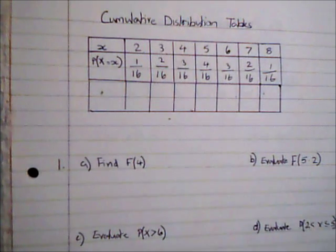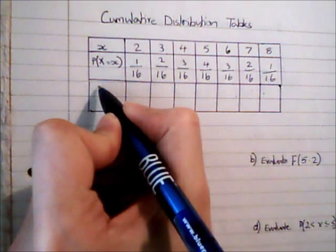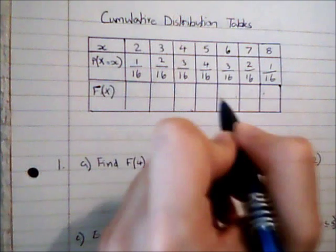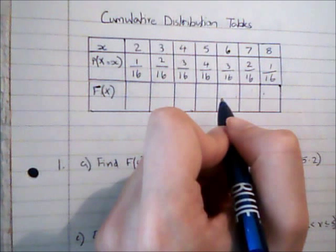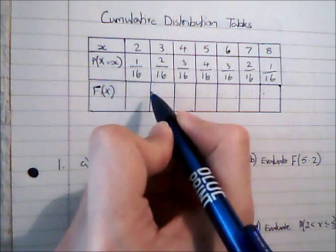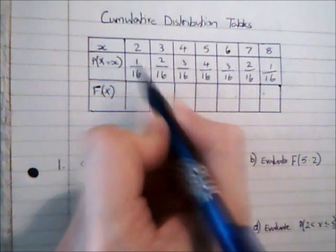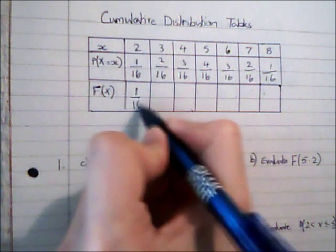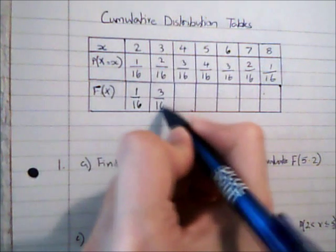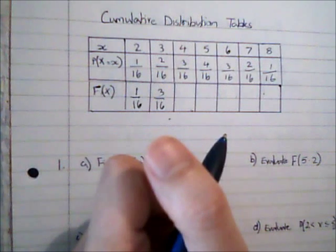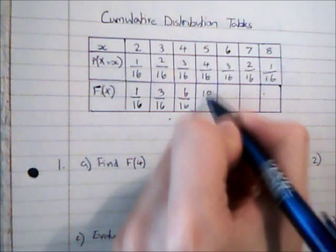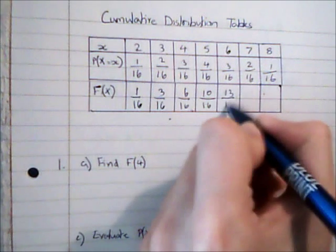I'm just going to add in here an extra row which is going to be the cumulative distribution, which we usually use a capital F for that. This first box is going to represent obtaining anything that is 2 or lower, so that's 1/16th. The next one is anything 3 or lower, so that's 2/16ths plus 1/16th, and as I go along I can complete this distribution.